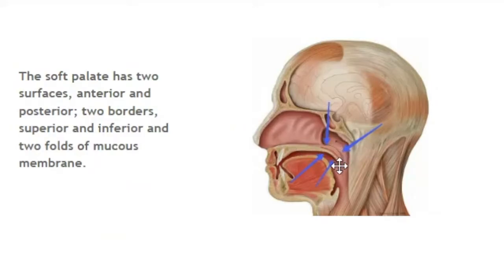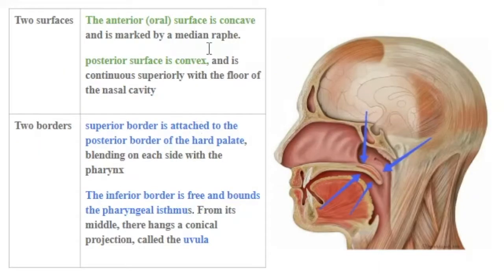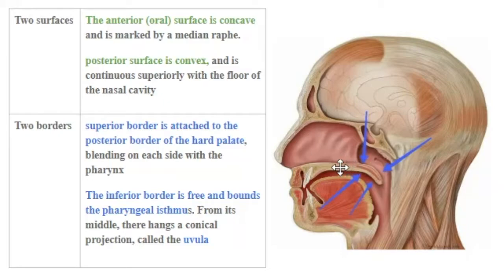Now let's look at the two surfaces and two borders of the soft palate. The surfaces are the anterior surface and the posterior surface, and the two borders are the superior border and the inferior border. The anterior surface is concave and is marked by a median raphe, while the posterior surface is convex and is continuous posteriorly with the floor of the nasal cavity. The superior border is attached to the posterior border of the hard palate, and the inferior border is free and bounds the pharyngeal isthmus.